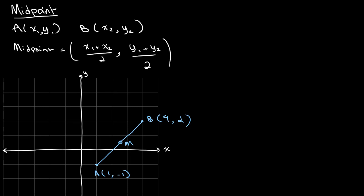One thing you might notice about the midpoint is that its x value will be halfway between the x values of A and B. Since A and B are at 1 and 4 for the x values, M will land halfway in between. Its y value will also be halfway between the y values of A and B, which are -1 and 2.